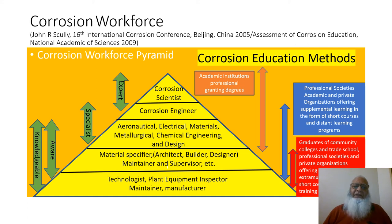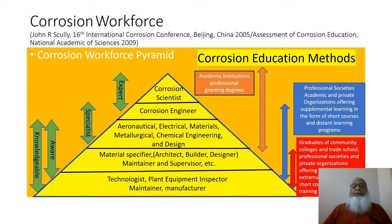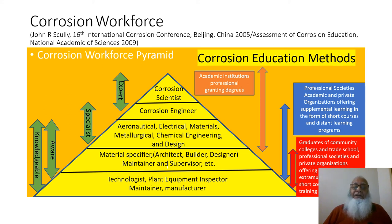Below corrosion scientists and engineers come other designers and chemical engineers, nautical engineers, electrical and metallurgical chemical engineering designers — they follow actual corrosion engineering and so on. The pyramid keeps expanding down to the last section, which includes technologists, plant equipment inspectors, maintainers, and manufacturers. The corrosion engineer has its own independent field in addition to ancillary fields and can expand its career as a workforce across different types of industries and institutions, both academic and non-academic.